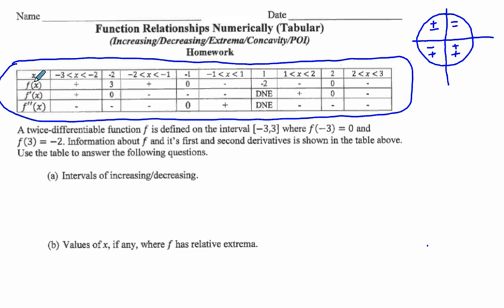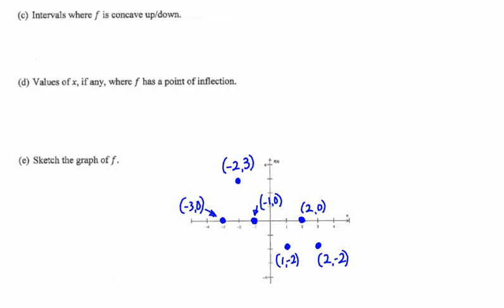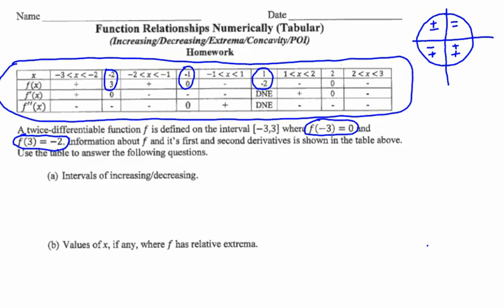They give us a twice-differentiable function with points: f(−3) = 0, f(−2) = 3, f(−1) = 0, f(1) = −2, and f(3) = −2. I've labeled all these points on the sketch graph portion, and we're going to connect them appropriately with what we find as we go from point A to B to C to D.